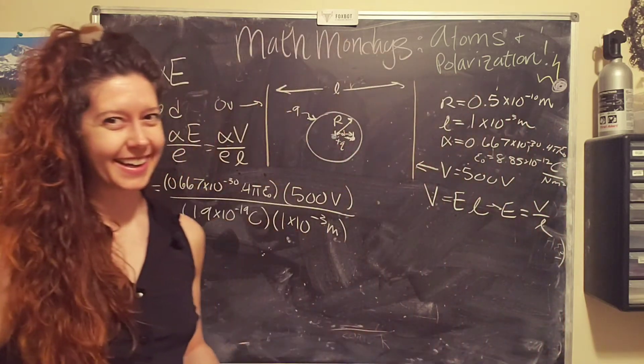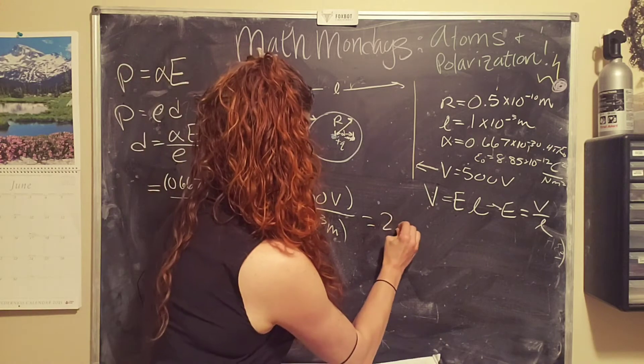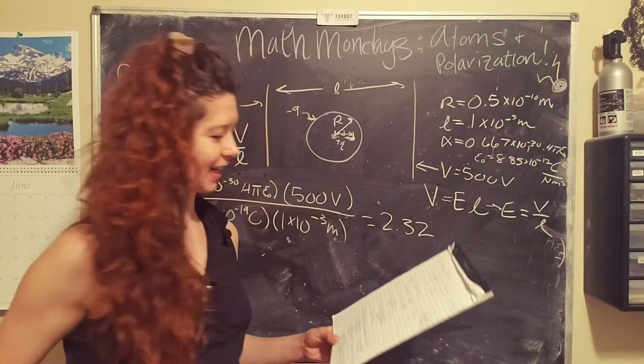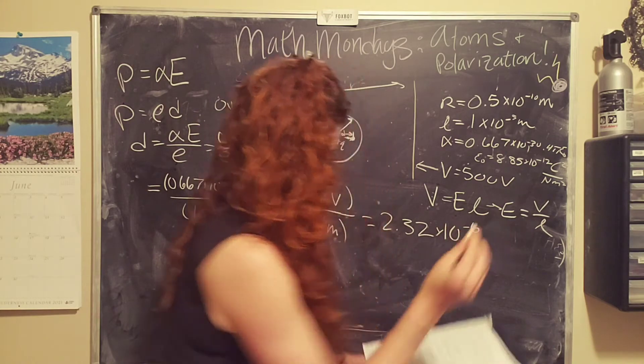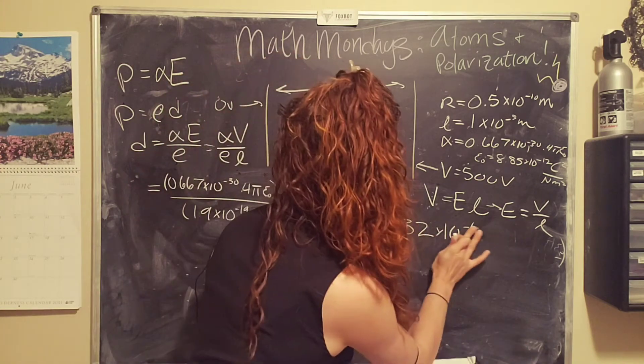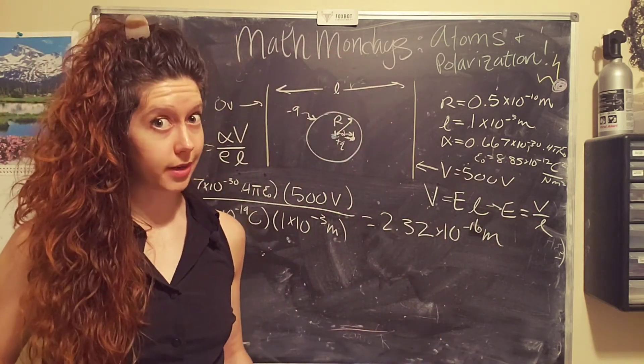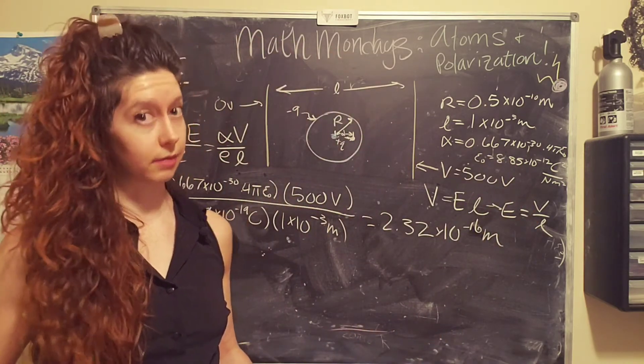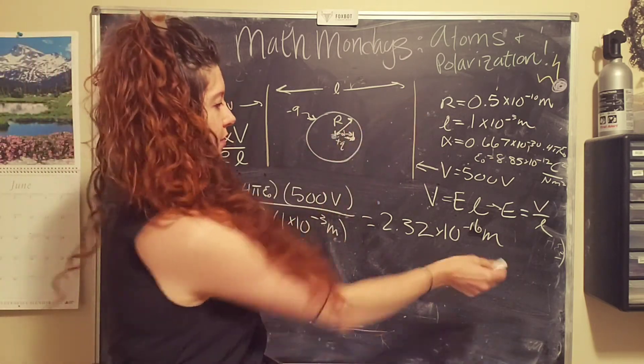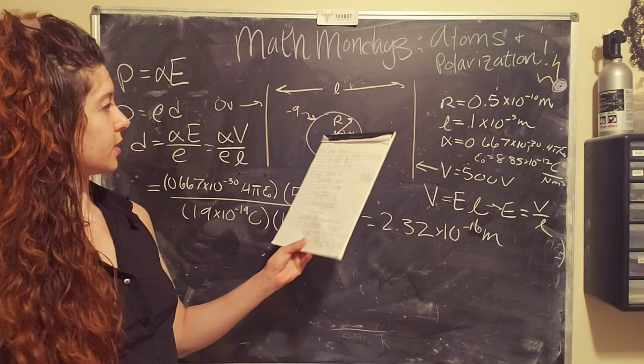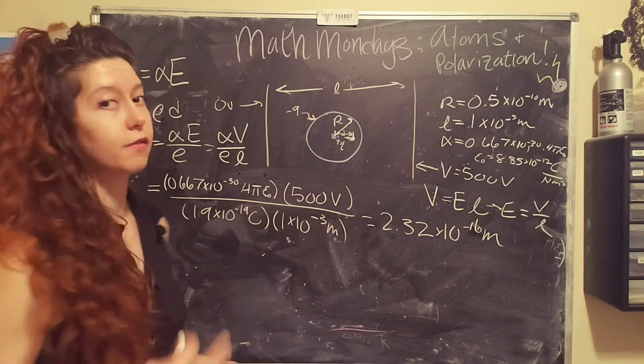And what you get is 2.32, calculator mistakes aside, times 10 to the negative 16th meters. That's real small, like real small.